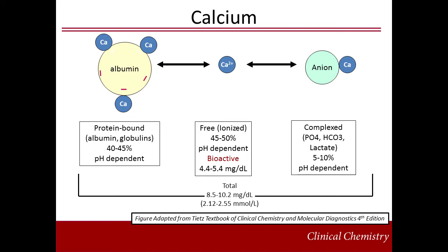Free calcium accounts for 45-50% of the total, and is the biologically active form of the mineral. It is this free form that is directly regulated by hormones such as PTH and vitamin D. Extracellular free calcium exerts its action by binding to the calcium-sensing receptor, which is widely distributed throughout the body. Anion-bound forms include complexes with phosphate, bicarbonate, citrate, and lactate.